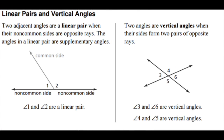For a linear pair, you have two angles that share a side and the two non-common sides are opposite rays. The two angles of a linear pair are always supplementary. Next, vertical angles occur when two lines cross each other, forming four angles. The opposite angles — such as four and five, or three and six — are vertical angles.